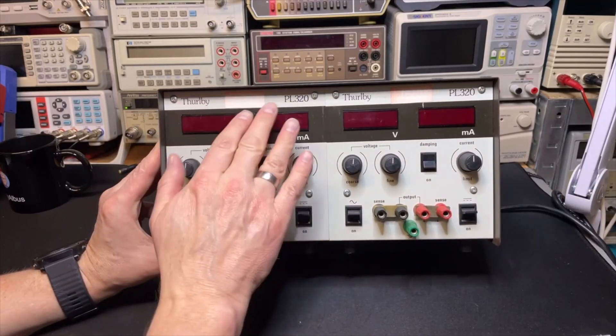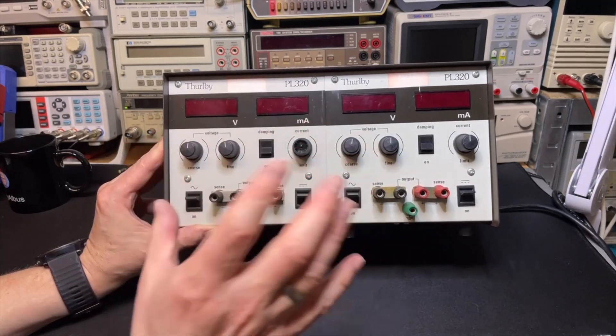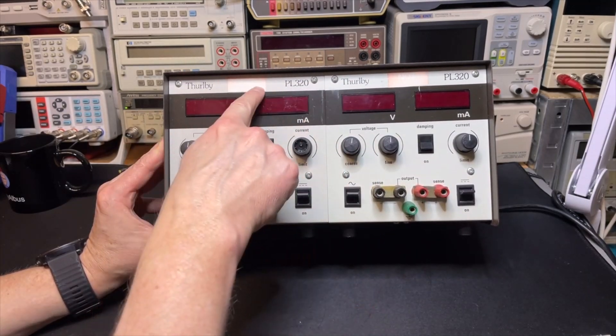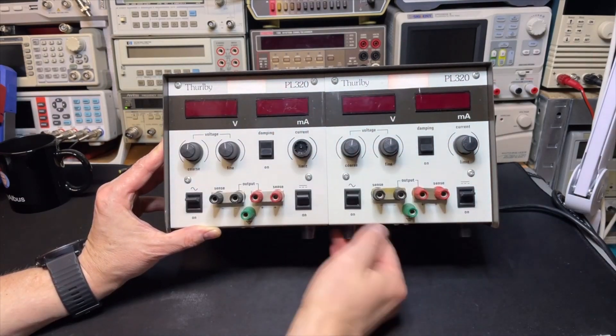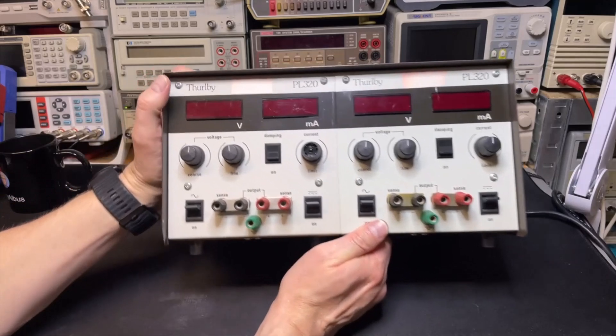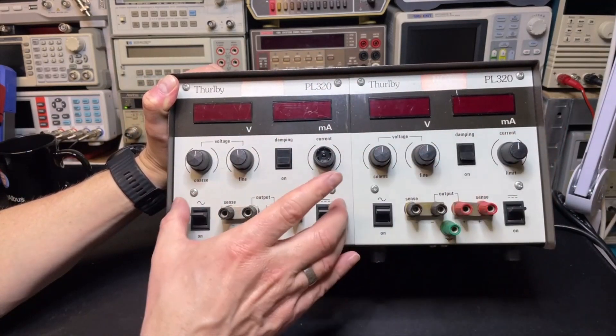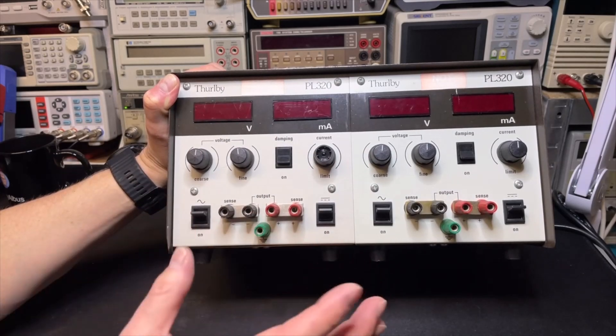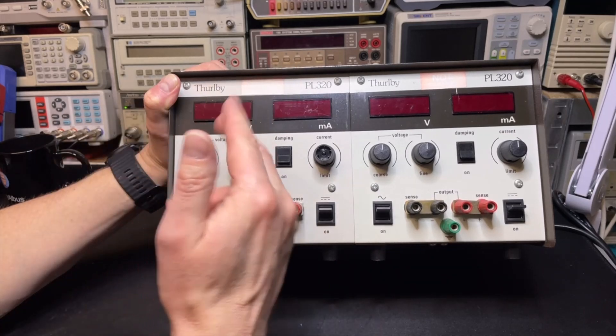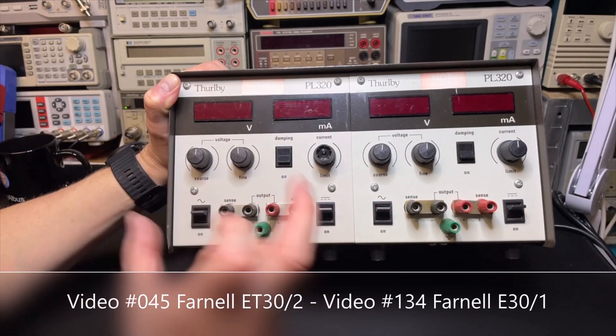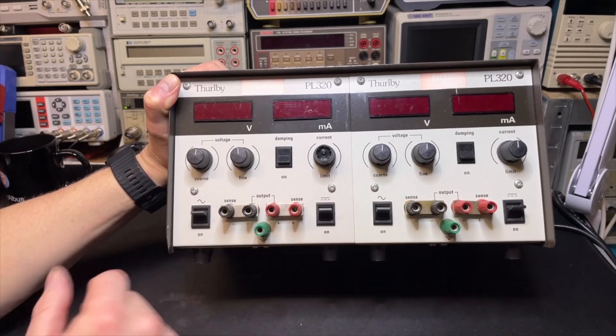Here it is, nice red displays, four digits. So it's kind of precise for that time. Not calibrated. We can take those stickers off because it doesn't really have a value. You can really see it is two separate power supplies, just like that Farnell power supply I had before, but that one had analog meters. You can buy it as a single one or as a double one. Very clearly it's a double one.